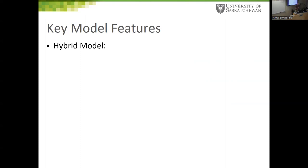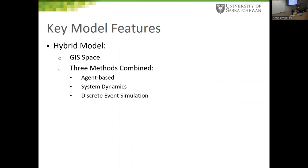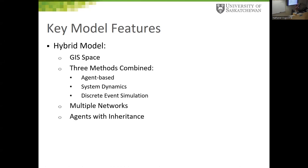The agent-based model was a hybrid model using a GIS space — essentially a map — where agents exist at geographic locations. We combined all three modeling paradigms supported by AnyLogic software: agent-based modeling, system dynamics modeling, and discrete event simulation. Multiple networks were set up, and we used inheritance — a computer science concept — to organize the many types of agents.